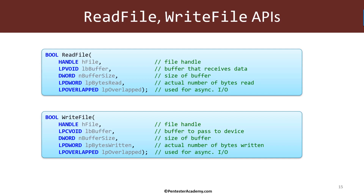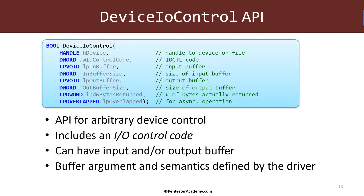ReadFile and WriteFile are the common functions for operations that are intuitively read or write. The third function, which is very useful, is called DeviceIoControl. This is the third common way to communicate with a device once you have an open handle. It is typically used when the operation is not a pure read or write — something just different — and is very common for devices that are not part of the file system, such as the device for Process Explorer. You provide the handle to the file object along with an I/O control code.